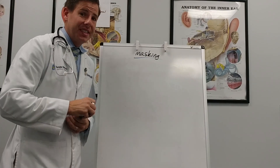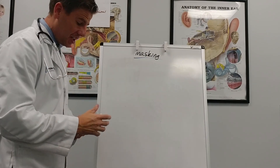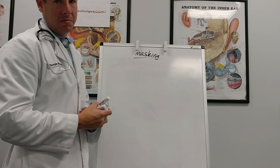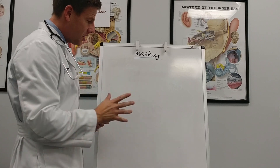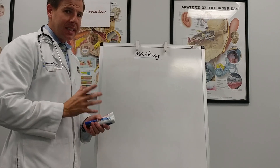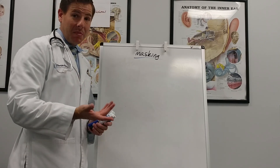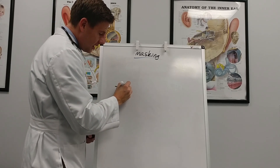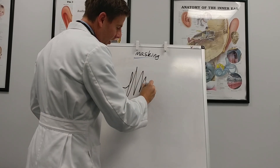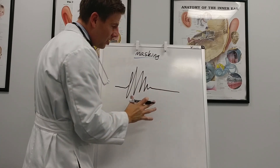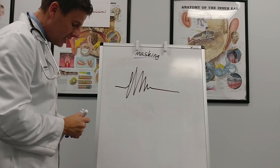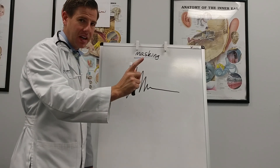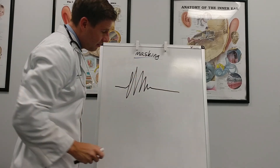Welcome to Auditory Precision. Today we're going to be talking about auditory masking and a couple phenomena that take place. The first thing I want to talk about is non-simultaneous masking, or temporal masking. This can involve a very quick onset loud noise called a transient. A transient noise in music would be like somebody hitting a snare drum or plucking a violin.